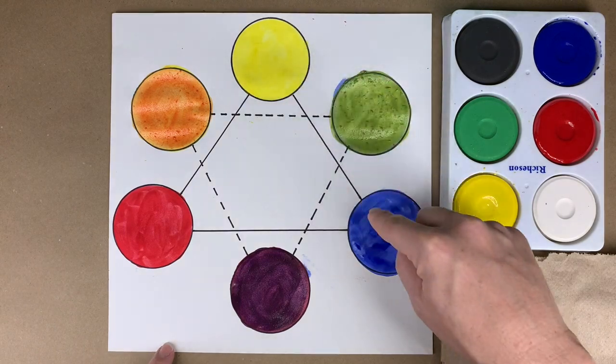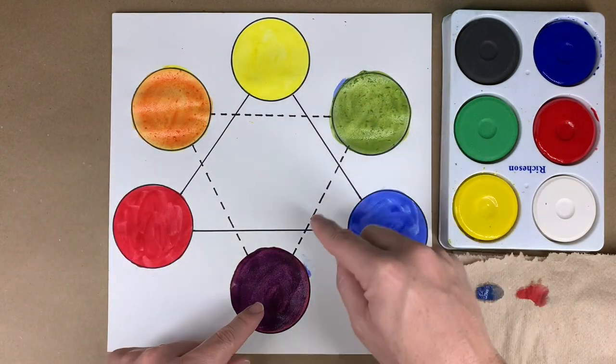So the primaries are yellow, blue, red. Secondary colors orange, green, purple.